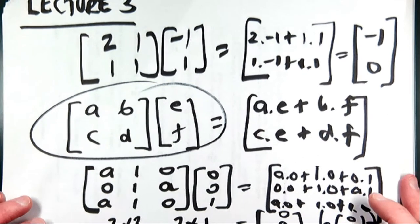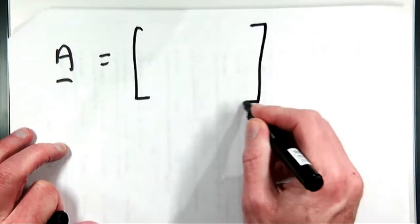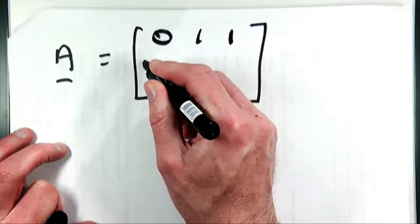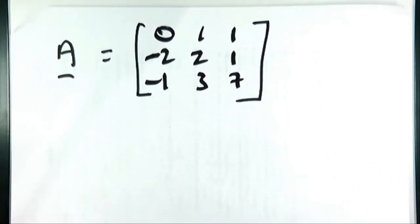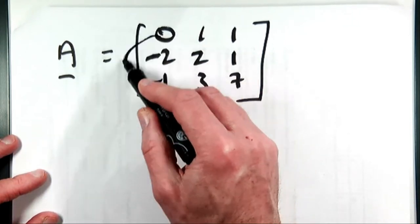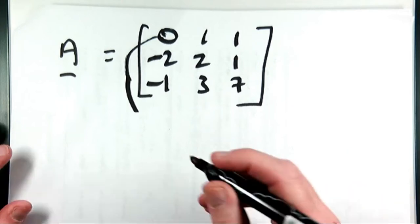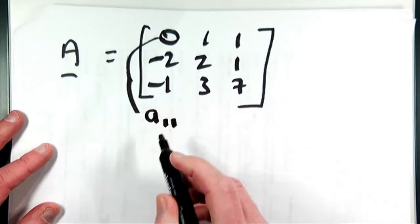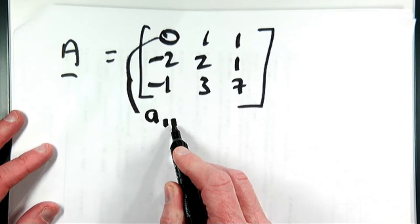There's also some notation I want to talk about. Suppose I have a matrix A: [0, 1, 1; -2, 2, 1; -1, 3, 7]. Each entry in the matrix has its own identifier. The number in the top left corner — because the matrix is called capital A — we call it A₁₁. The first subscript is the row, the second is the column. So A₁₁ says I'm in the first row and first column, which is 0. A₁₂ is 1, and A₁₃ is 1.